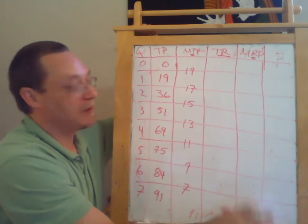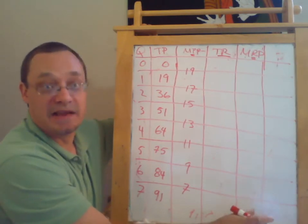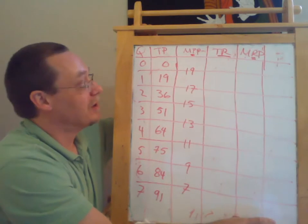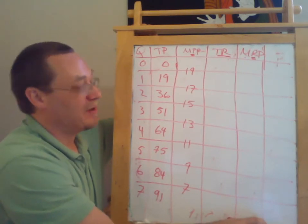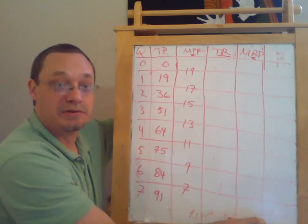So we're sort of assuming we have the same amount of, say, land if we're a farm, or the same amount of machines if we're a factory. We're using the same amount of raw materials or inputs.